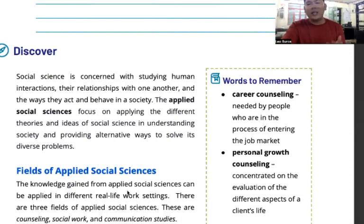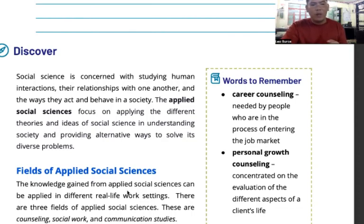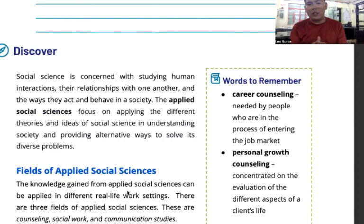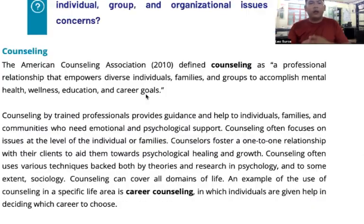The Applied Social Sciences focus on applying the different theories and ideas of social science in understanding society and providing alternative ways to solve its diverse problems. The knowledge gained from applied social sciences can be applied in different real-life work settings. There are three fields of applied social sciences: these are counseling, social work, and communication studies.